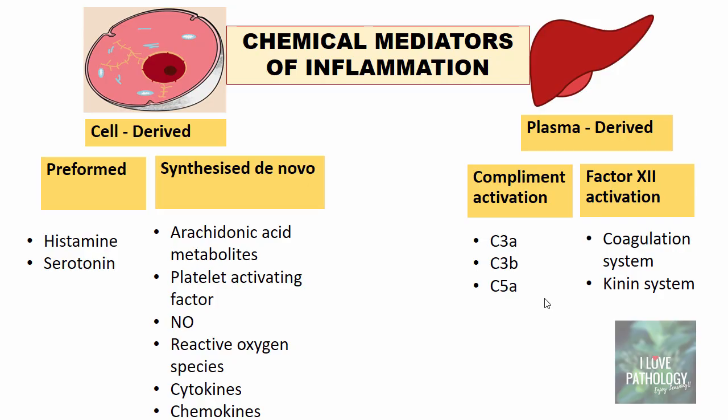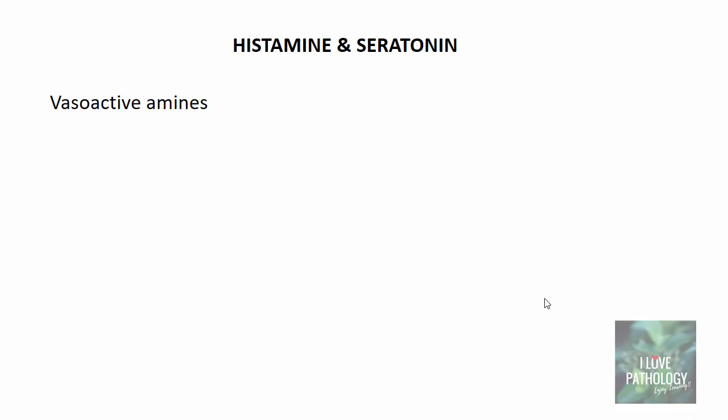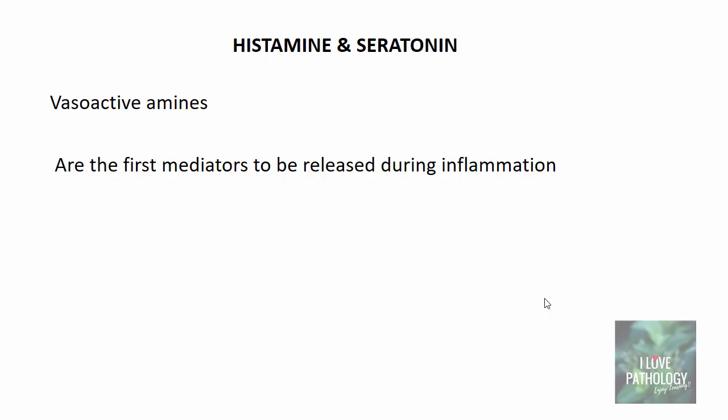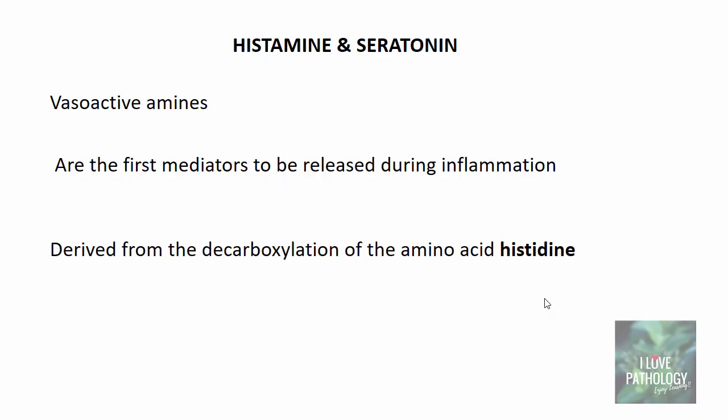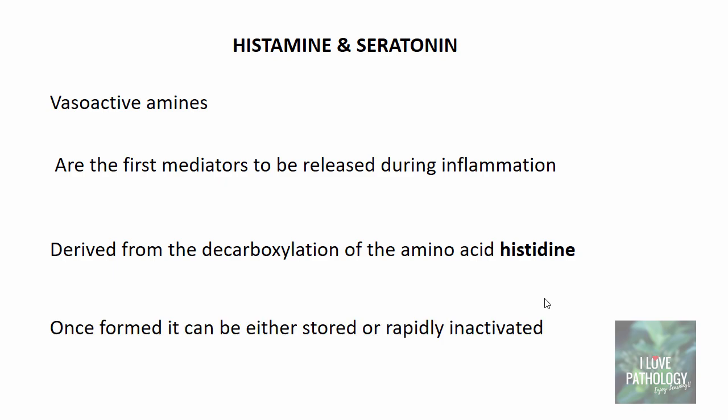Let us understand more about histamine and serotonin in today's tutorial. I will be describing the other mediators in detail in subsequent videos. Histamine and serotonin are basically vasoactive amines. They are the first mediators to be released during inflammation, and they are derived from the decarboxylation of the amino acid histidine. Once formed, they can either be stored or rapidly deactivated. Most often they are stored within the granules of various cells.